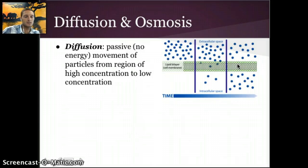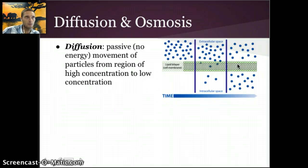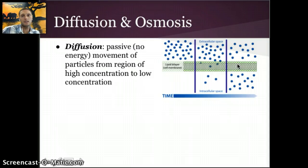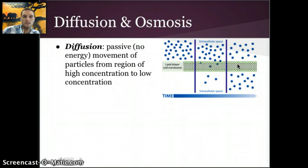Diffusion doesn't necessarily happen only within a cell. If you light a match or a candle in the corner of a room, or spray perfume or cologne, initially someone at the opposite end of the room won't be able to smell it. Over time, those particles will diffuse throughout the room, and after a couple of minutes you should be able to smell them. That is diffusion.